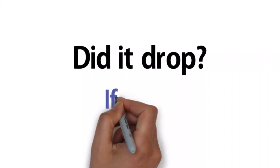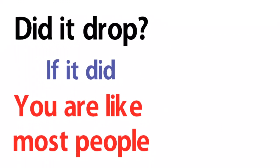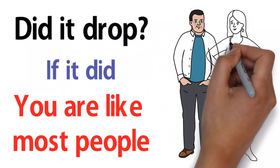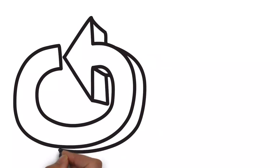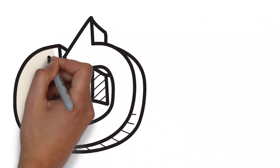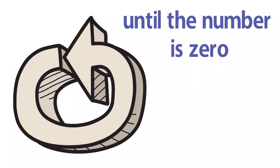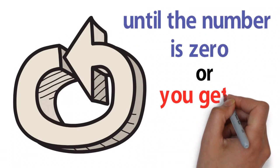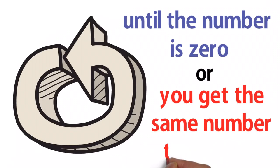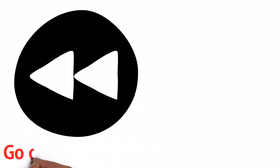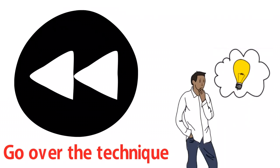Did it drop? If it did, you are like most people. Repeat this technique from the right hand over the eye position until the number is zero, or you get the same number three times. Rewind this video, and go over the technique until you have memorized it.